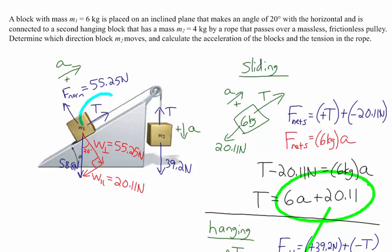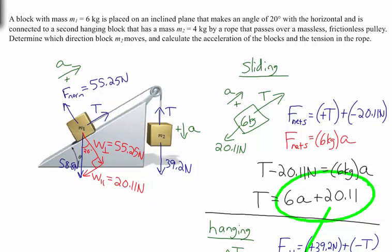To double-check: the tension pulling up the incline is 31.564 Newtons, and the parallel component of the weight pulling down is 20.11 Newtons. Since 31.5 > 20.11, this agrees with M1 accelerating up the incline. For M2, 39.2 Newtons pulls down and 31.56 Newtons pulls up. Since 39 > 31, this agrees with M2 accelerating downward. The answers are consistent.